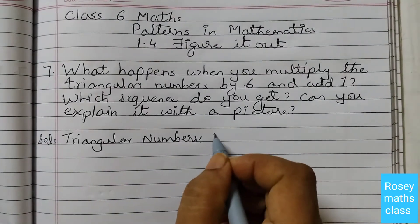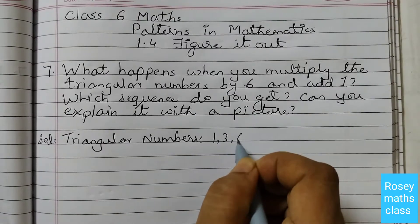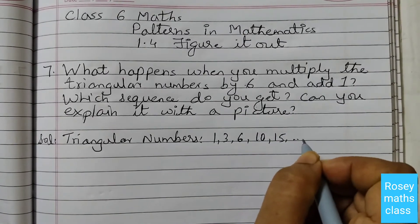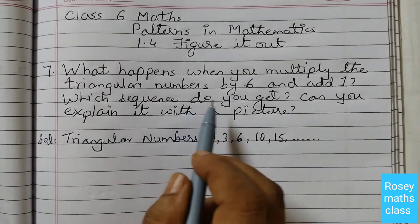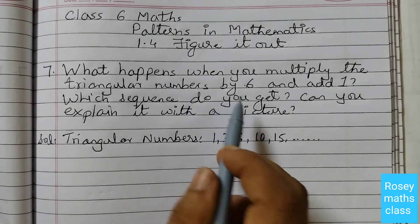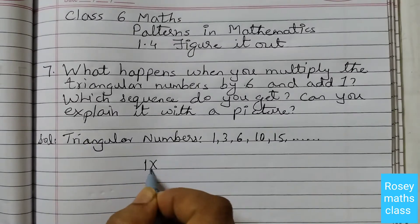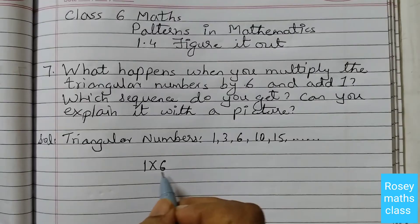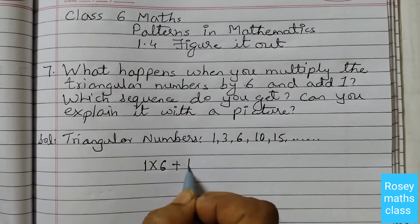Triangular numbers are 1, 3, 6, 10, 15 and so on. Now we need to multiply each of these numbers by 6. So 1 into 6 and add 1. After multiplying by 6 we need to add 1.